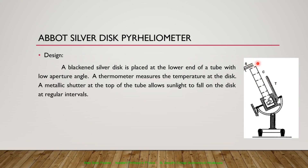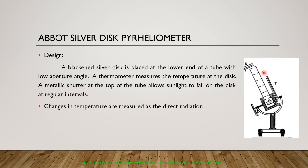The shutter is opened and closed at particular intervals of one minute. When the shutter is closed we get a temperature reading T1, and when the shutter is open we get a temperature reading T2. The difference T2 minus T1 gives the solar radiation measurement.